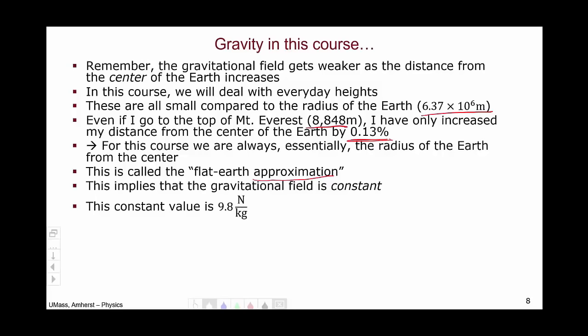This constant value has been measured to be 9.8 Newtons per kilogram. Therefore, in this class, we will say that the force of gravity from the Earth on an object, whatever it is, and forces are vectors, will be the mass of the object, say an apple, times g, where this g is 9.8 Newtons per kilogram.